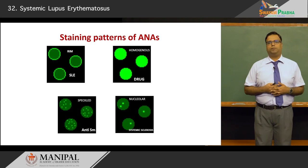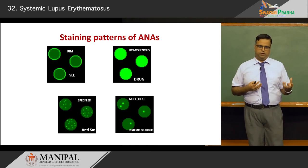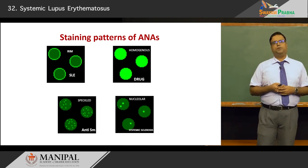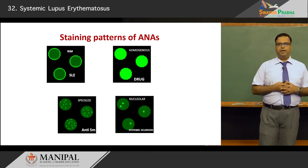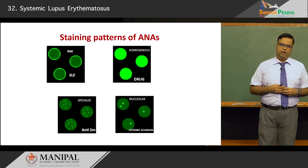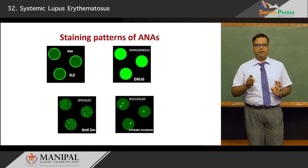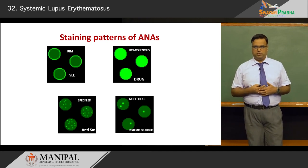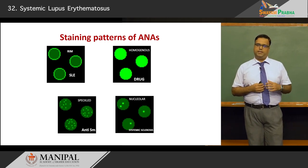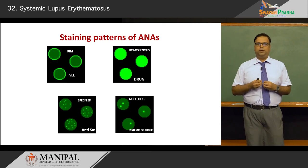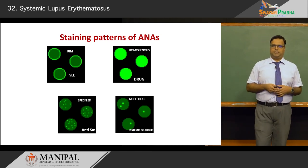The staining pattern of anti-nuclear antibodies is of relevance as it indicates the underlying disorder. The RIM pattern, where antibodies are seen along the nuclear membrane, is very typical for SLE. Homogeneous staining of the entire nucleus is usually seen in drug-induced lupus. A speckled or mottled pattern is associated with anti-SM, again seen in SLE, while the nucleolar pattern, staining only the nucleoli, is seen in systemic sclerosis.